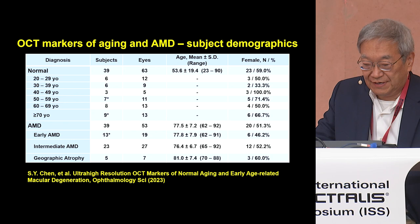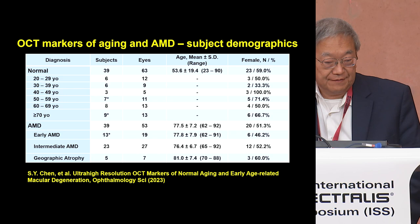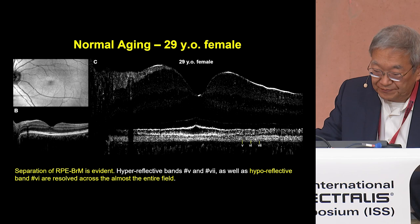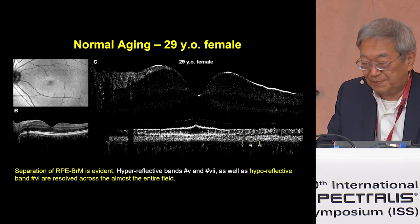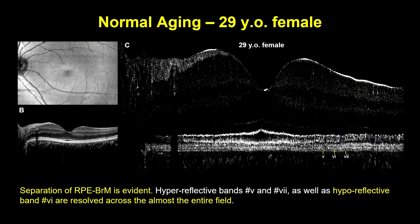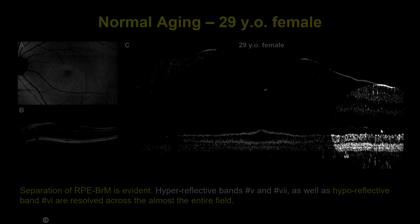We'll present a study here on normal aging and early AMD. The enrollment includes a variety of normal subjects with emphasis on early and intermediate AMD. In order to visualize and read these images, we flatten them to Bruch's membrane and expand the vertical scale. Here you can see a normal young subject where we can resolve the separation of Bruch's membrane from the RPE.